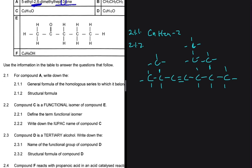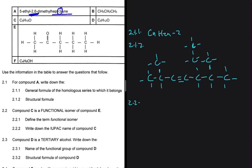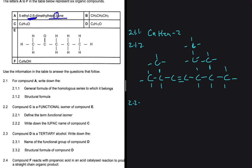And now moving to 2.2. 2.2 says that compound C is a functional isomer of compound E. So compound E is a ketone. Why are we saying compound E is a ketone? Because the carbon bonded to the oxygen is in between two other carbons. We have this carbon here and this other carbon. So it means that compound C is an aldehyde. Because the functional isomer of a ketone is an aldehyde and vice versa.